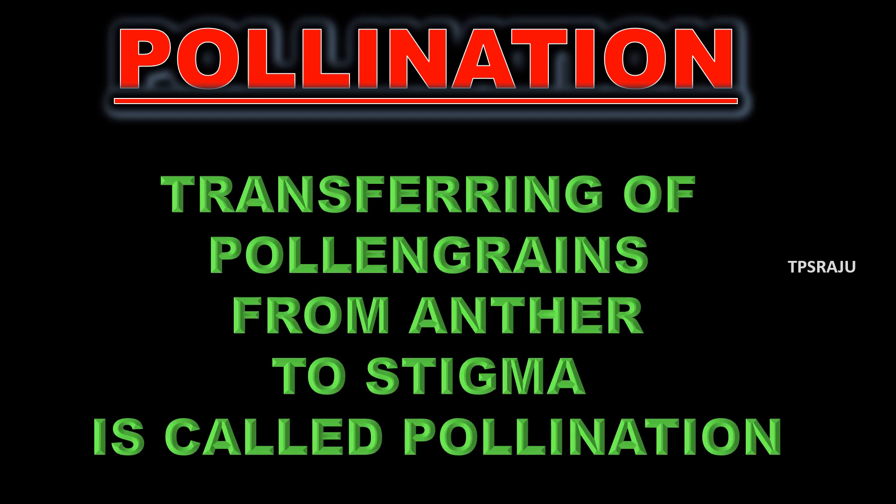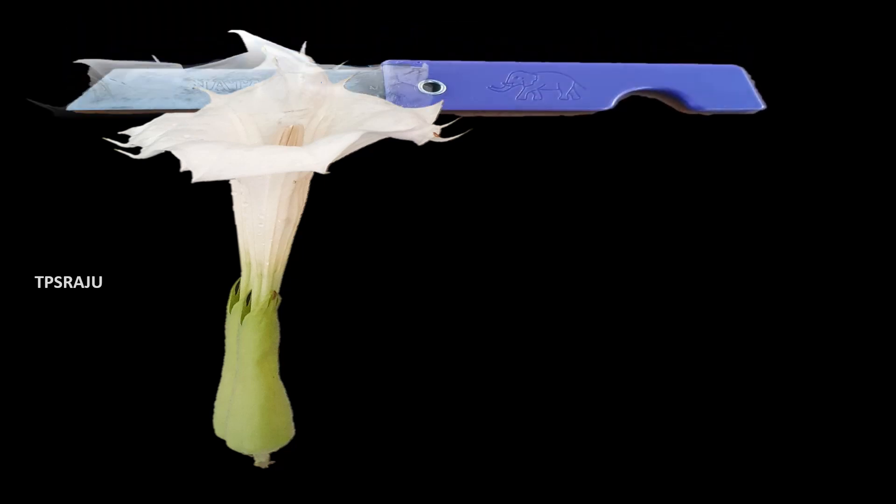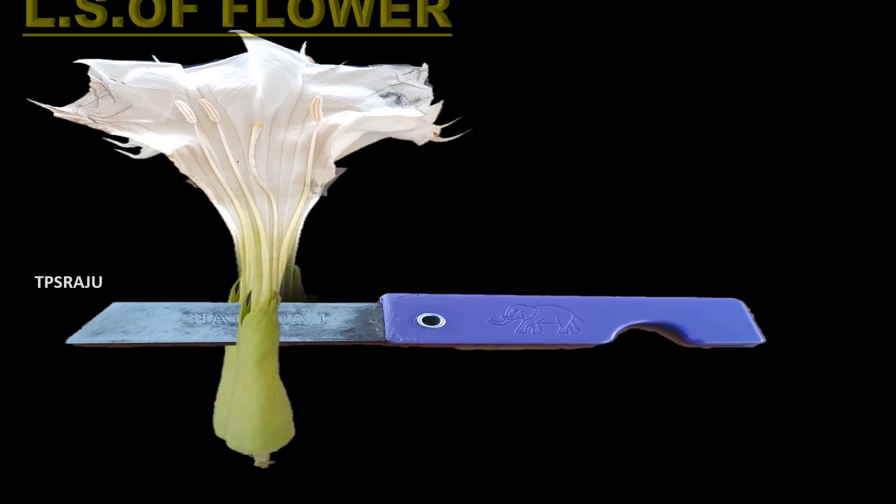First we have to know what is meant by pollination. Pollination is the process of transferring pollen grains from the anther to the stigma. Pollen grains and stigma are all present in the flower. Now we are going to see these parts by making a longitudinal section of a flower.